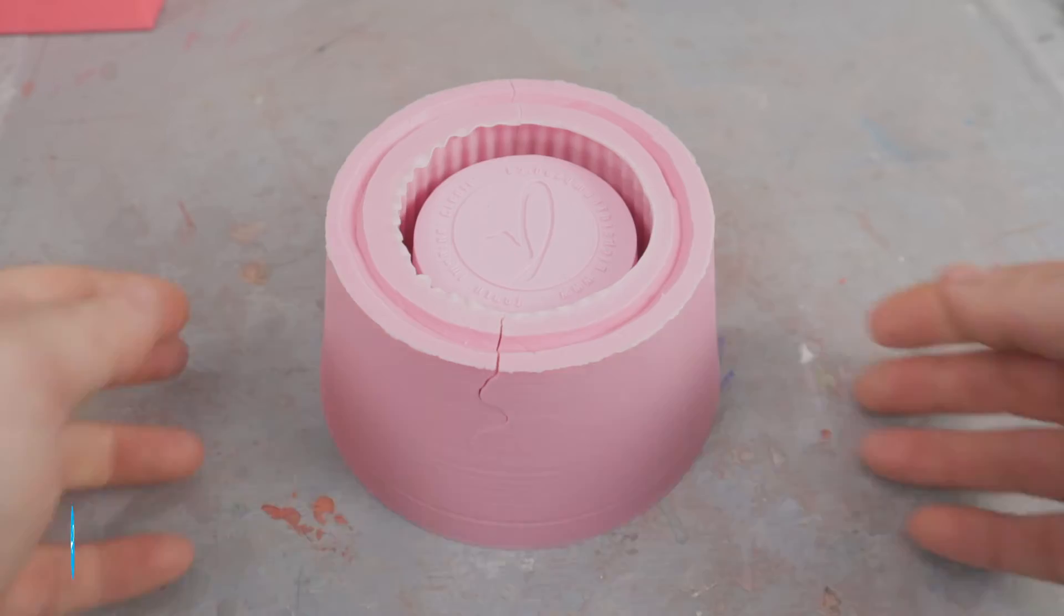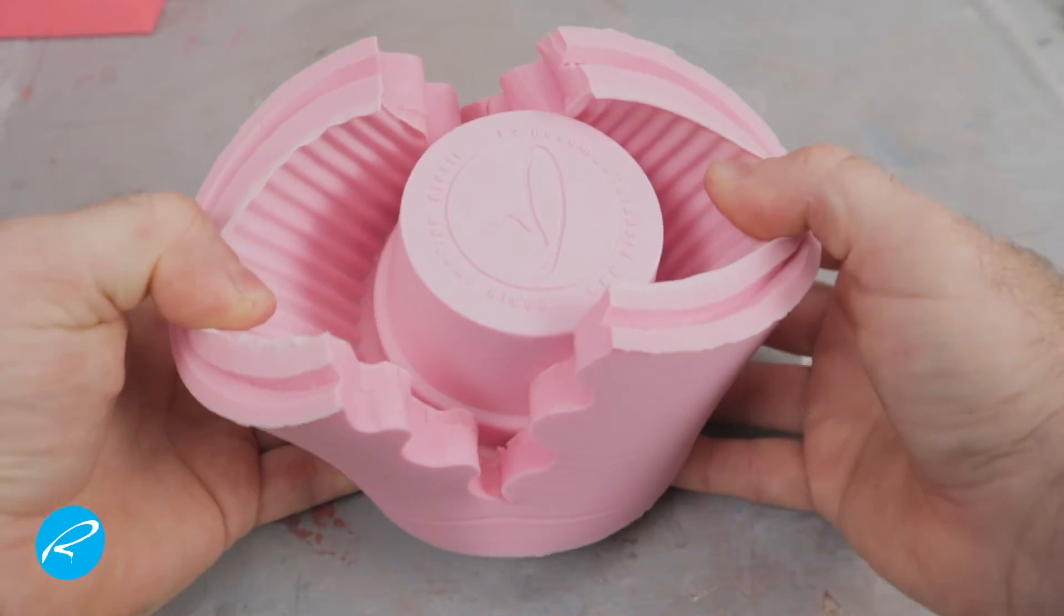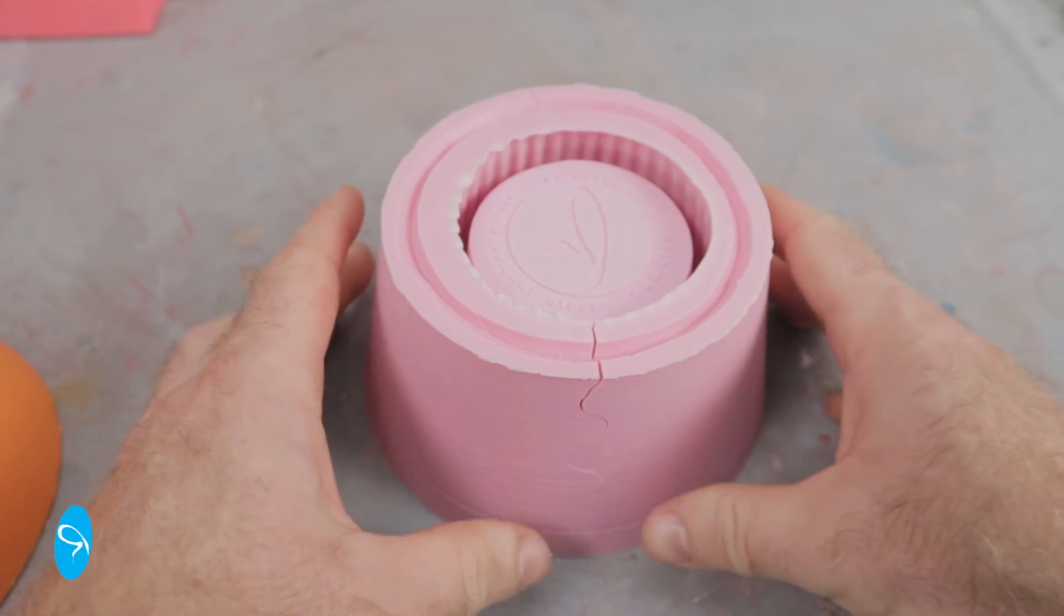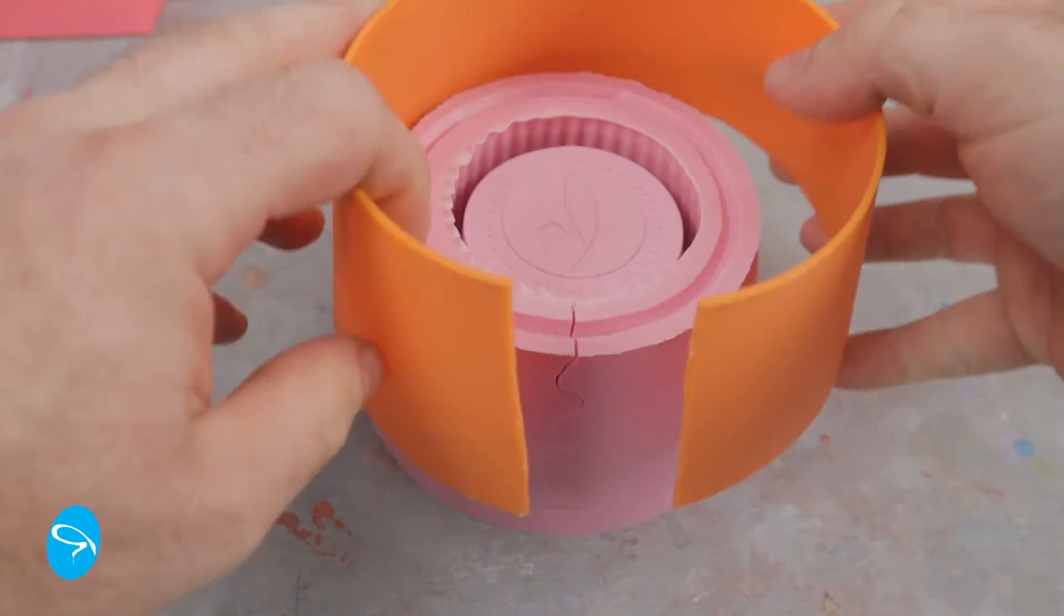When I want to cast a new part, I use this split print. The benefits being that it's an exact fit, of course, because the mold came out of it. But if you accidentally break it, you can just print another identical copy.